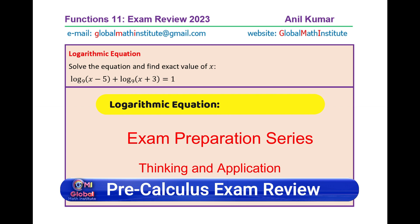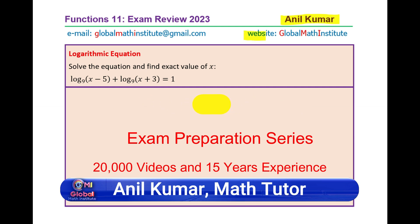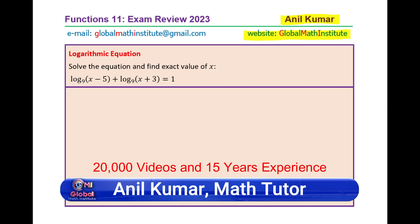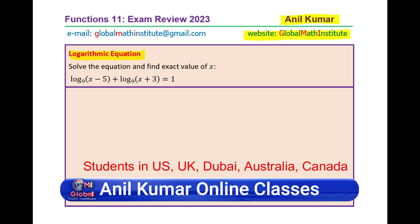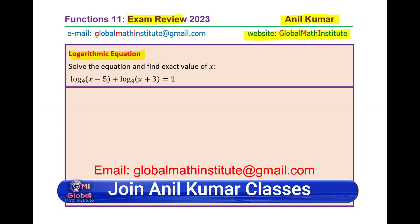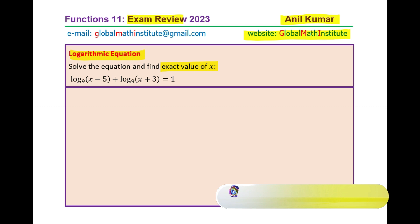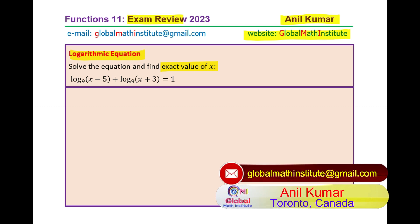Here is a logarithmic equation which can have extraneous roots. I am Anil Kumar, welcome to my YouTube channel and the website Global Math Institute. The question is: log to the base 9 of (x - 5) plus log to the base 9 of (x + 3) equals 1. Solve the equation and find the exact value of x. You can always pause the video and answer the question.